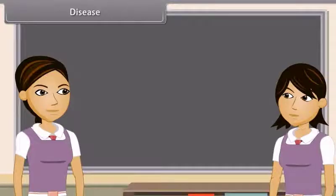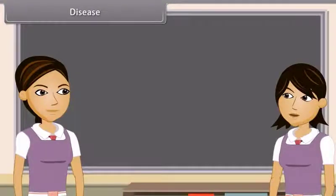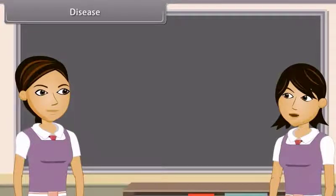Do you know that when we are unhealthy, we are having one or more diseases? Disease means disturbed ease. Scientifically, disease can be defined as a disordered or incorrectly functioning organ, part, structure or system of the body resulting from the effect of genetic or developmental errors, infection, poisons, nutritional deficiency or imbalance, toxicity or unfavorable environmental factors — illness, sickness, ailment.